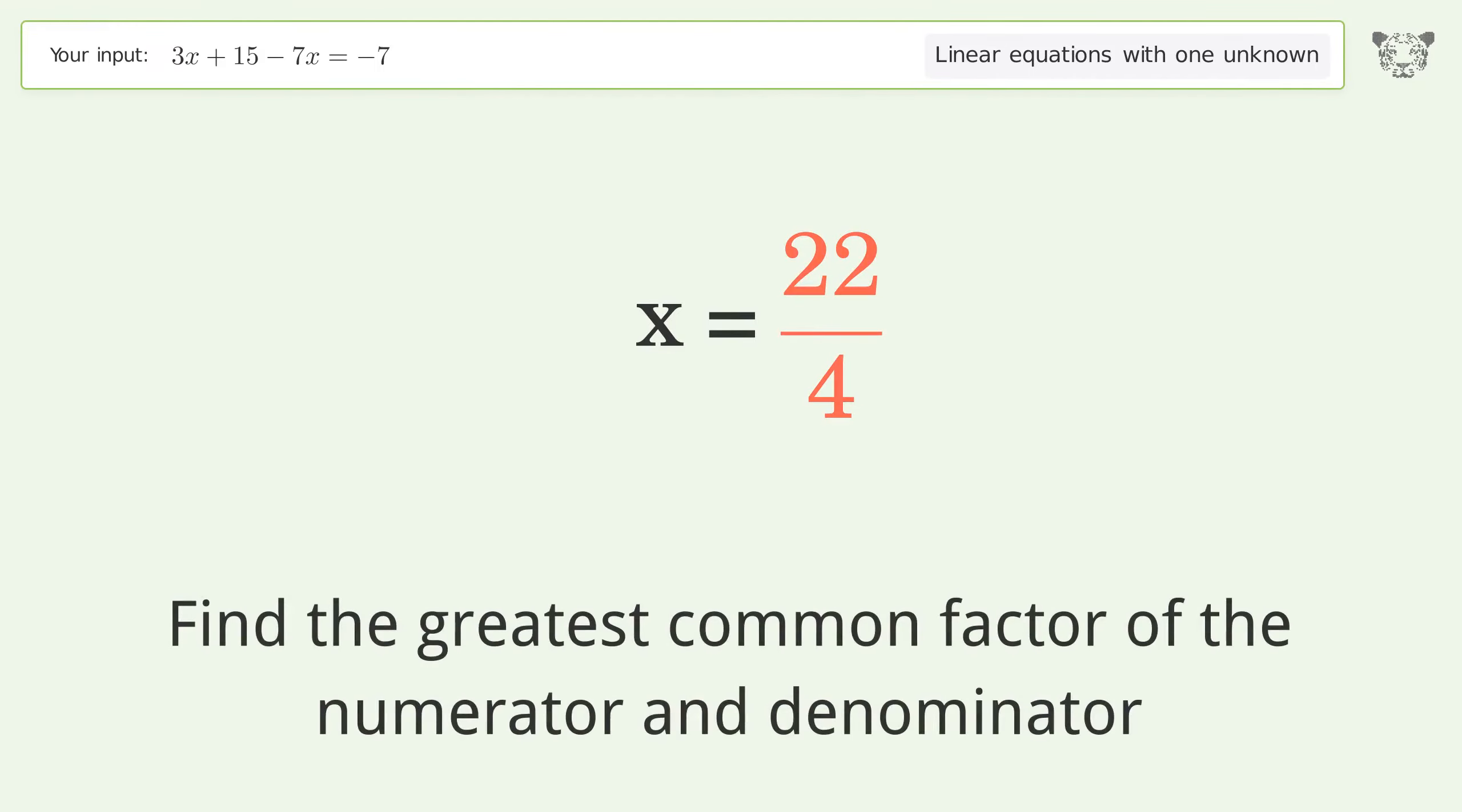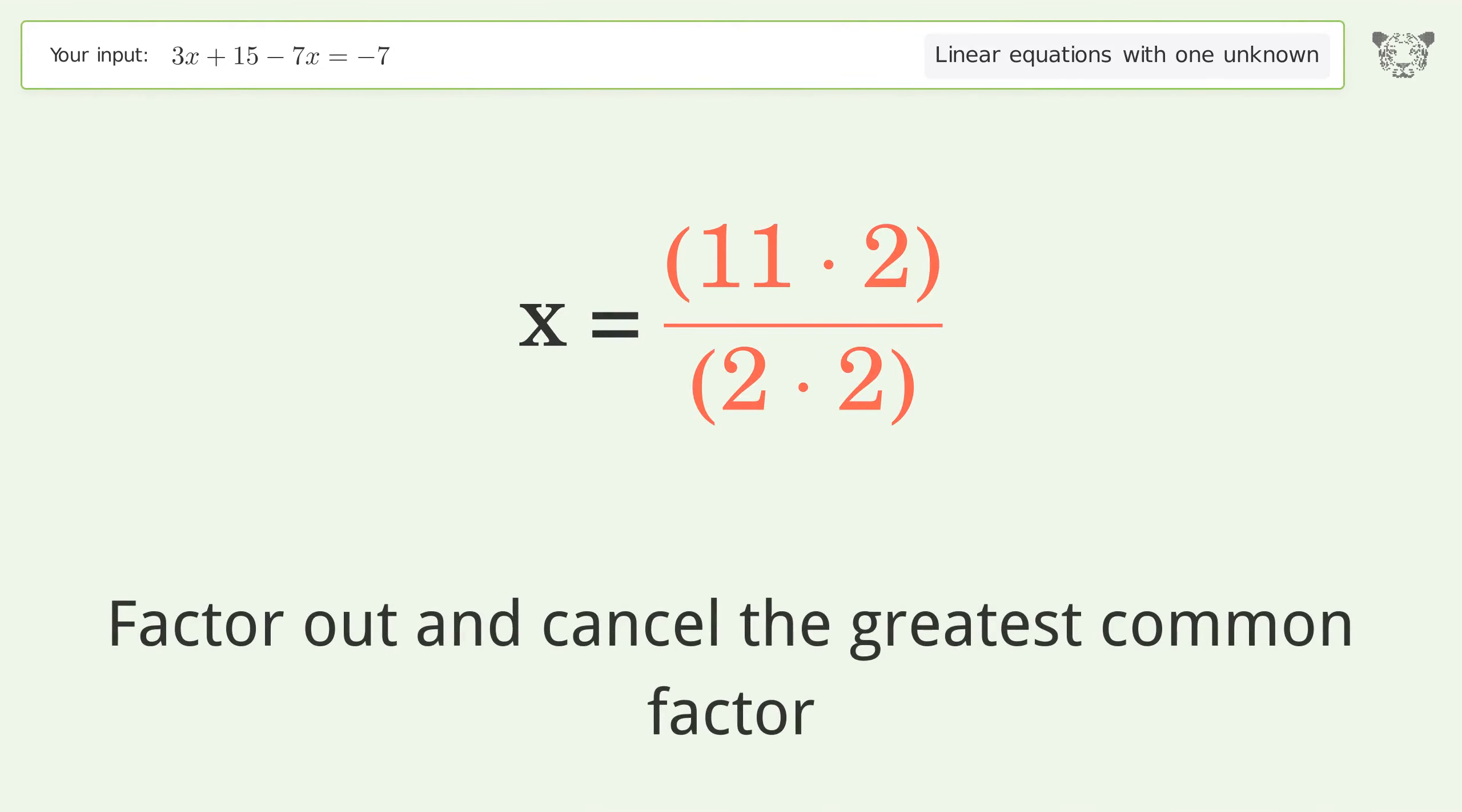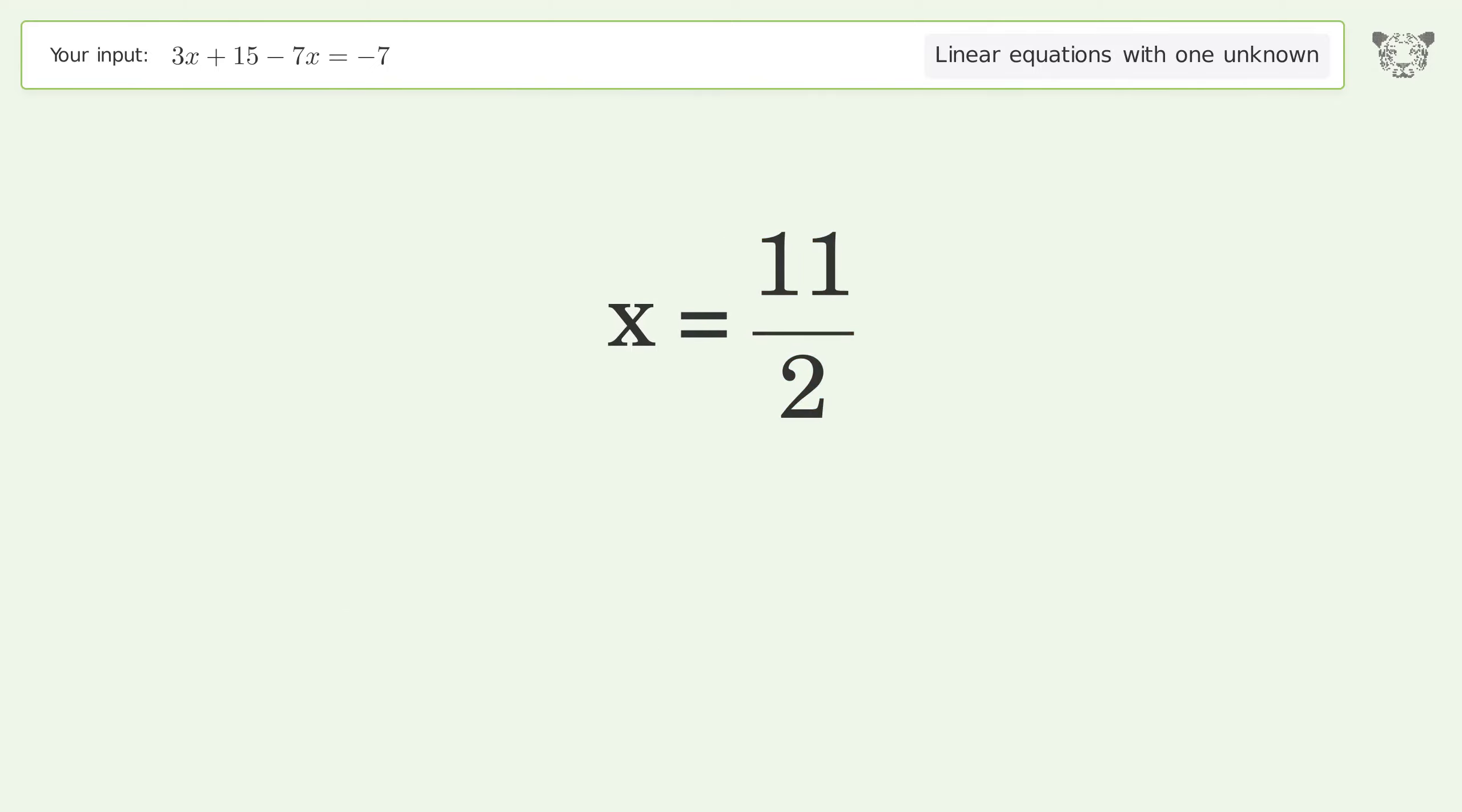Find the greatest common factor of the numerator and denominator, factor out and cancel the greatest common factor. And so the final result is x equals 11 over 2.